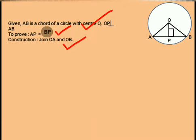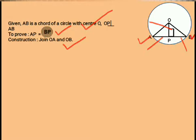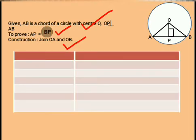In this figure, OP is perpendicular to the line AB, which is the chord, and we are asked to prove that AP is equal to BP. As a construction, the center of the circle O is joined to the points A and B. Now we construct the table with the headings Statements and Reasons.